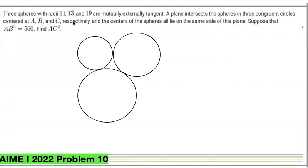We have these three spheres. Looking from above, they're mutually externally tangent. A plane intersects the spheres and creates three congruent circles centered at A, B, and C respectively, with the centers of the spheres all on the same side of this plane. A rule tells us AB² must be 560, and we're asked for AC².